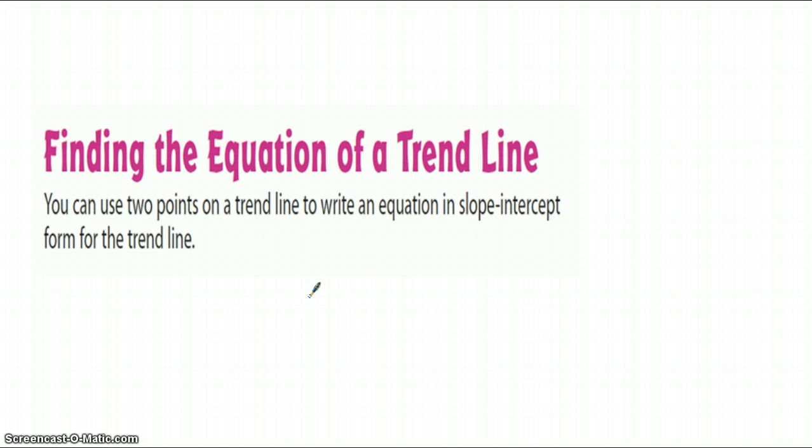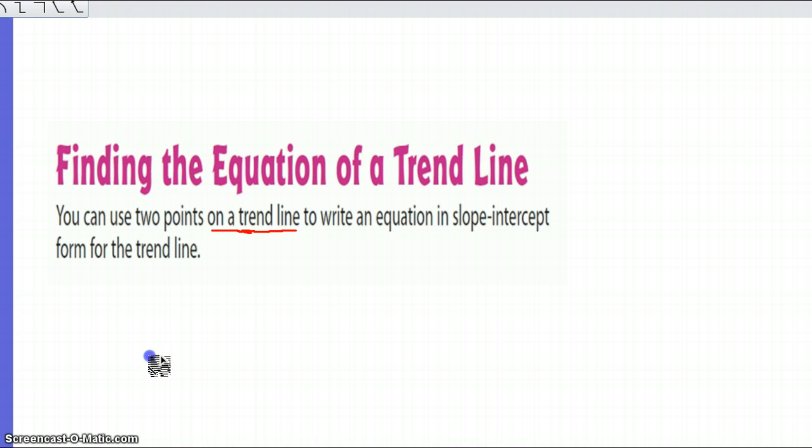So the author tells us that you can use two points on a trend line to write an equation in slope-intercept form for the trend line. Now, I want you to definitely be aware of what he's saying here. You can use two points on the trend line to write an equation in slope-intercept form for the trend line. So this trend line is going to be, you remember we talked about earlier when we said that these particular points will cluster, either they cluster around a point or they'll cluster along a line. Well, this particular line that they're going to cluster on will be this line that we draw and we can do that with an equation or we can also draw this particular line and this line will split pretty much our data.